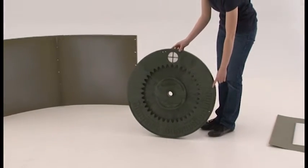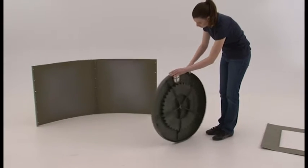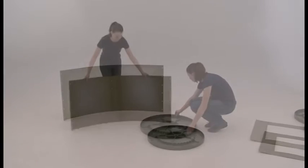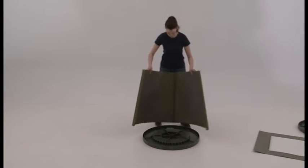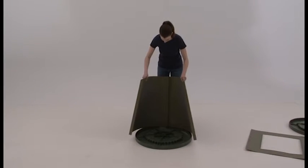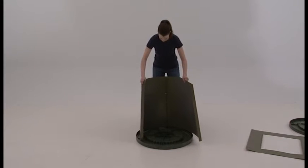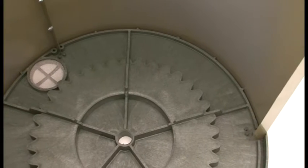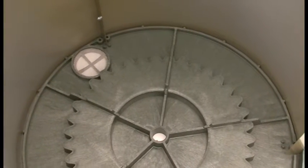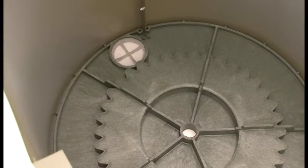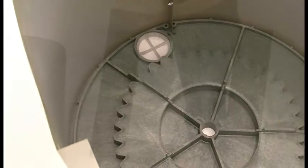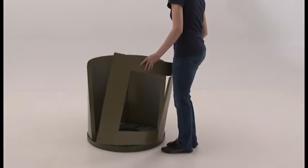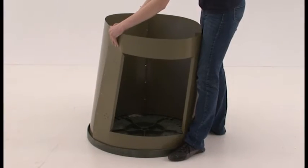Place the end cap with the lettering facing down. Fit the two panels into the end cap with the center fins positioned in the slot near the screen. Carefully fit the door panel into the last open space of the end cap to complete the drum cylinder.